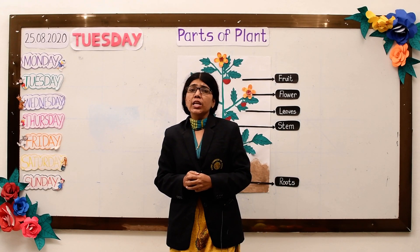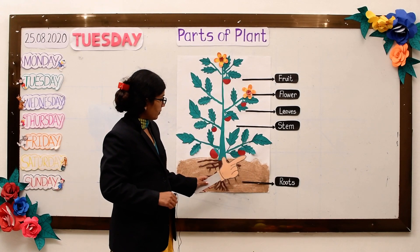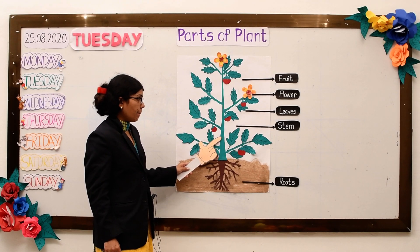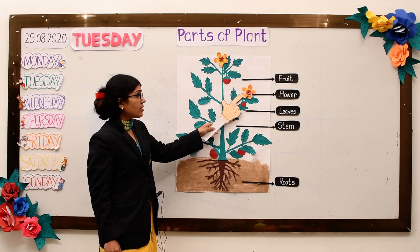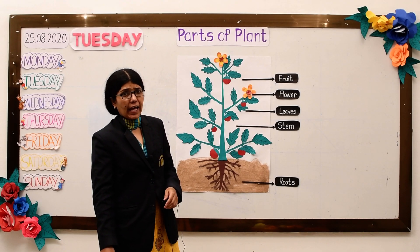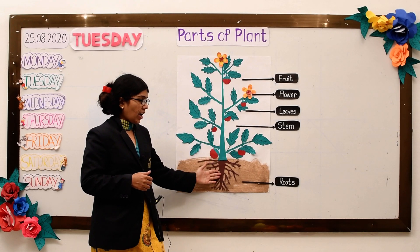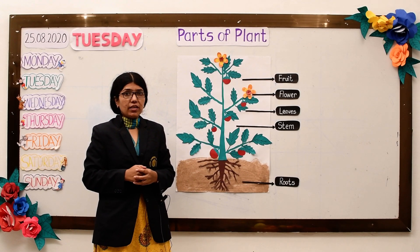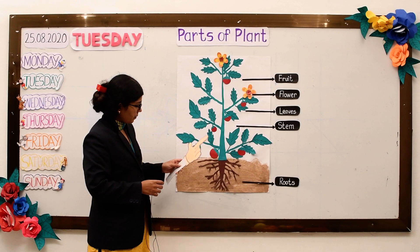Today I will tell you about the parts of a plant. The basic parts of a plant are roots, stem, leaves, flowers, and fruit. Each part has a set of jobs to do to keep the plant healthy. So let us see the parts of a plant — starting with roots.